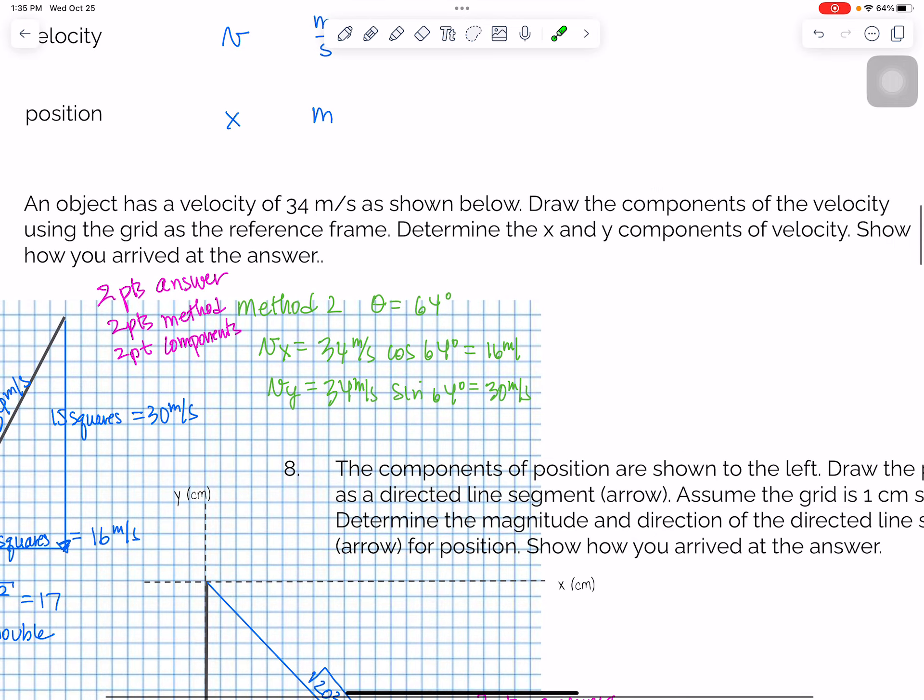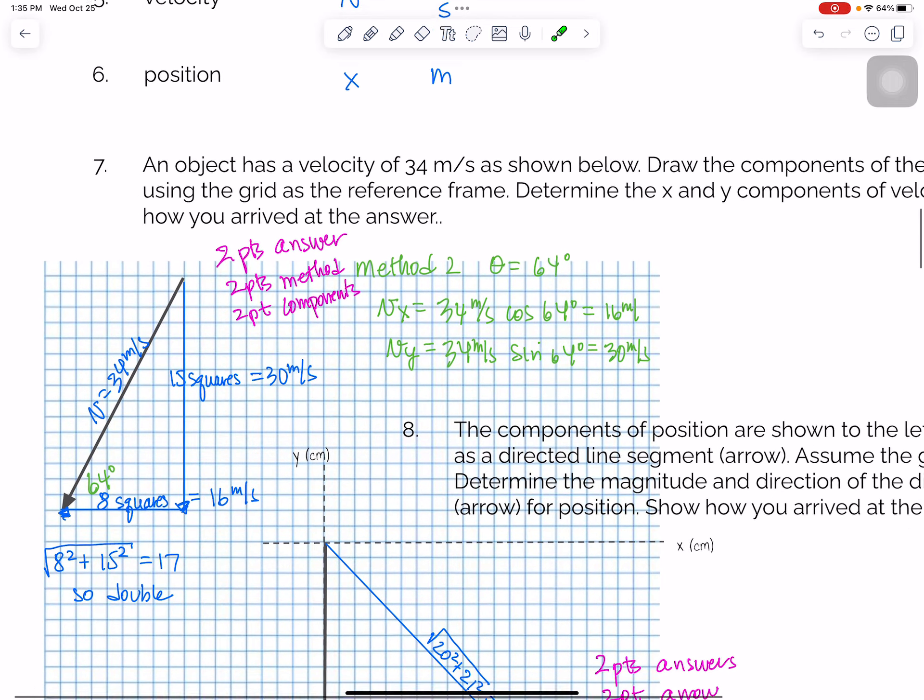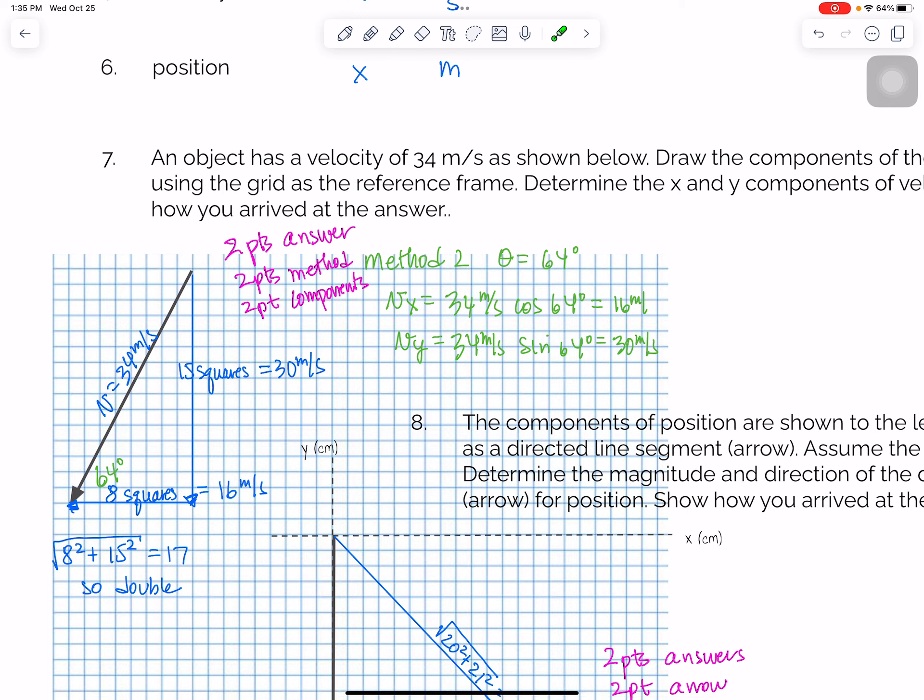The next thing you needed to do was to determine the X and Y components of the velocity. There were two ways to do this. Way one is you could count the squares. So it was 15 squares this way, 8 squares that way. Use Pythagorean theorem to find out that the hypotenuse would be 17 squares. I told you that that is equivalent to 34 meters per second squared, and that basically means all of the values were doubled. So 15 squares is 30 meters per second, or 8 squares is 16 meters per second. So that was one way to do it.